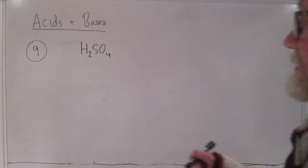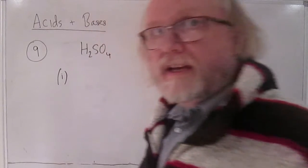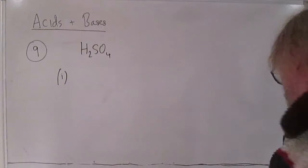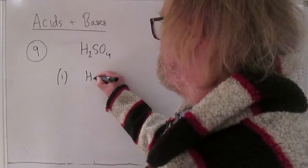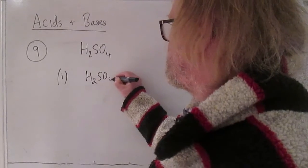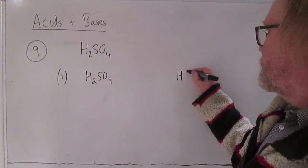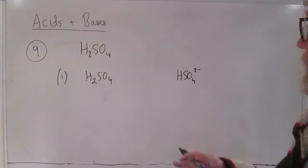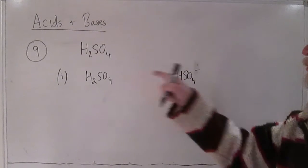So in Bronsted-Lowry terms the thing you have to remember is that conjugate pairs always differ just by one proton. So if we start with H2SO4 that's going to be the acid and its conjugate base is going to be not sulfate but hydrogen sulfate HSO4 minus. Because it's just one proton different.